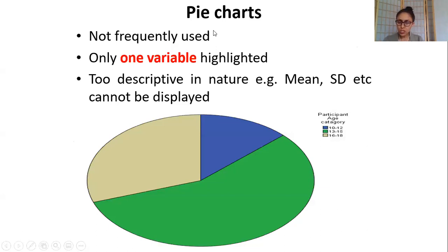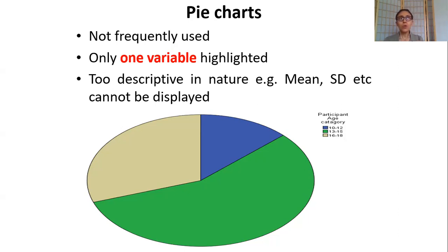Then you have pie charts. They are not really used frequently — I haven't used one in any of my papers. You can only display one variable at a time and it is very descriptive. Pie charts are not very frequently used in nutrition sciences, but in descriptive epidemiology — for example, causes of infant mortality such as communicable diseases like diarrhea, pneumonia, typhoid, and malaria — pie charts are useful. When doing more complex bivariate or multivariate analysis, pie charts are generally not used.